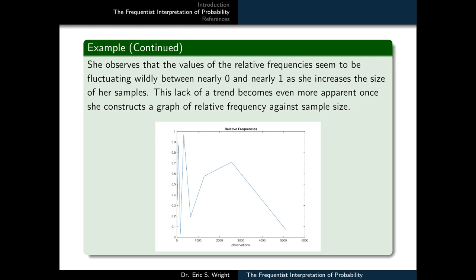bears out the suspicions that we were possibly able to develop just by looking at the data itself. The relative frequency fluctuates wildly between nearly zero and nearly one as she increases the size of her samples. The fluctuations are very fast at first, they slow down a little bit later on,